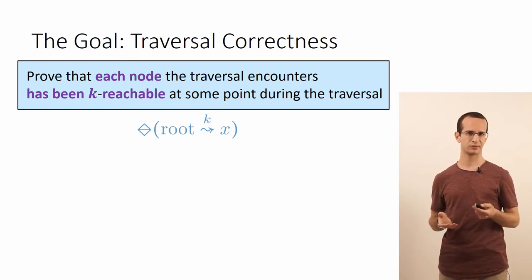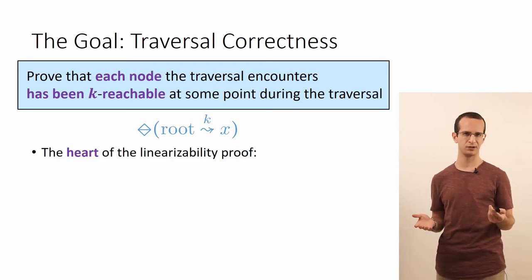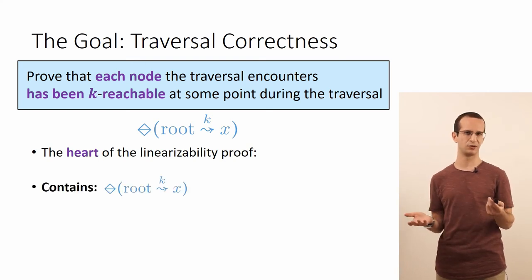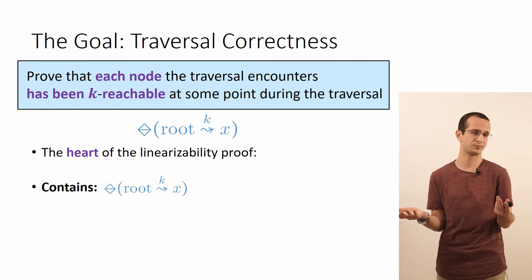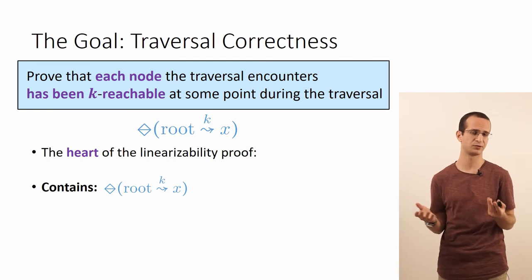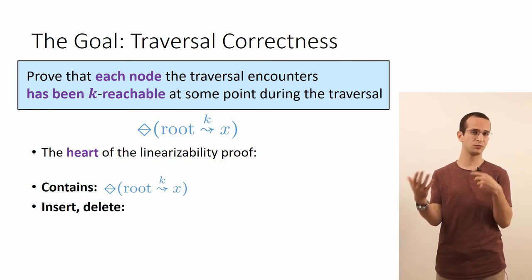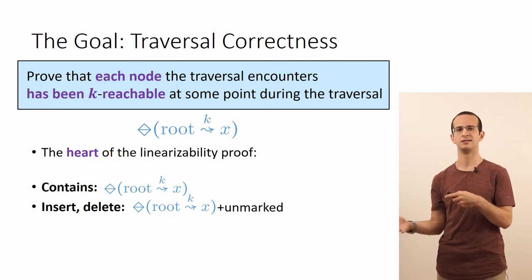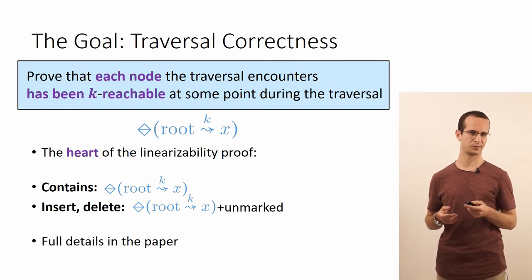And it turns out that this traversal correctness is almost everything you need to do the entire linearizability proof of this algorithm. Because for contains, that's basically all you need to know — that the node has been reachable at some point during the contains operation. And for insert and delete, you need to know that plus the fact that the node is not marked as physically removed; the full details appear in the paper.